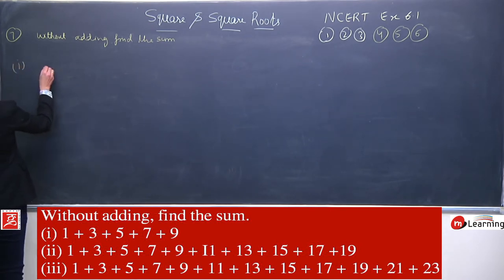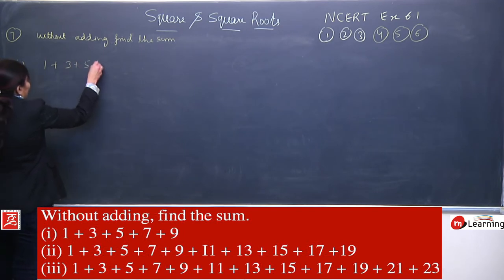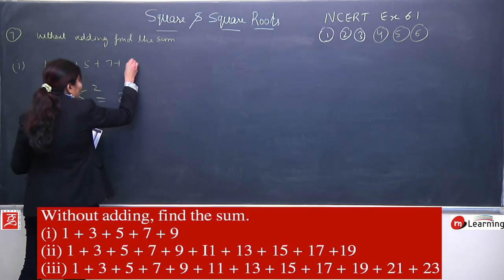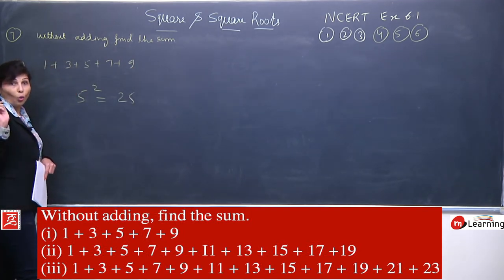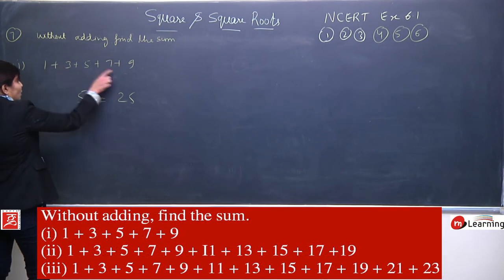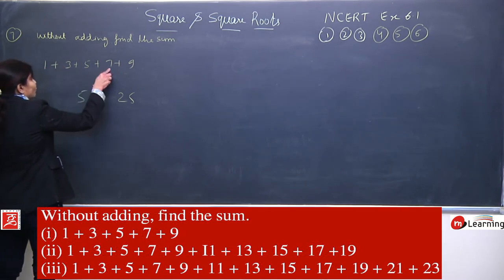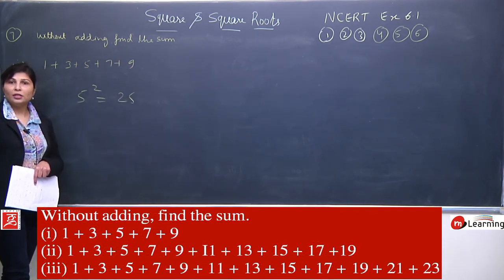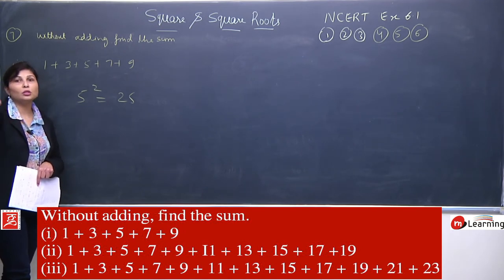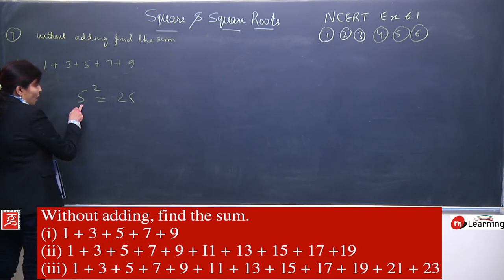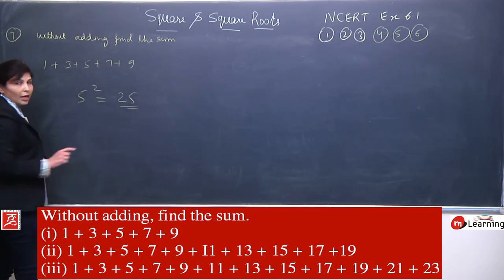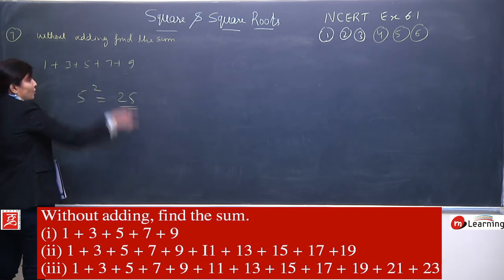First part: 1+3+5+7+9. Count these: 1, 2, 3, 4, 5 — they are 5 odd numbers. So the answer is 5 squared = 25. Verify: 9+1=10, 7+3=10, 10+10+5=25. Yes! Second part: 1+3+5+7+9+11+13+15+17+19. Count: 1 through 10 — they are 10 odd numbers. So the answer is 10 squared = 100. No need to add — just count and square.